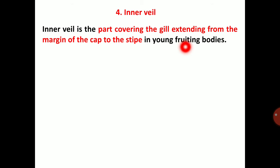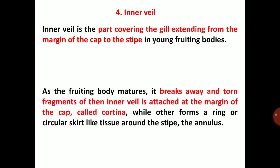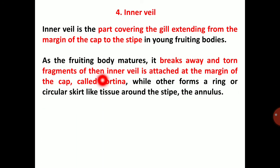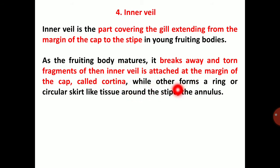As the fruiting body matures, the gill cover or annulus breaks away. The inner veil is attached at the margin of the cap, called the cortina, while in other forms it creates a ring or circular skirt-like tissue around the stipe — the annulus.